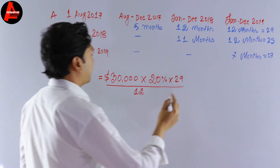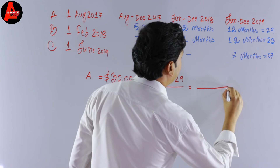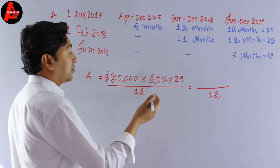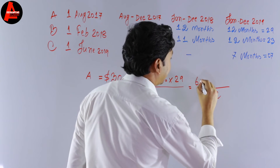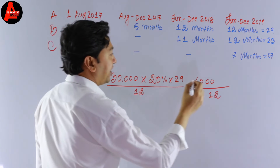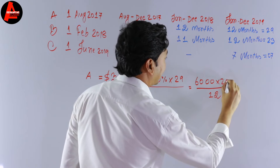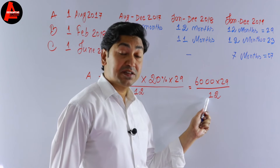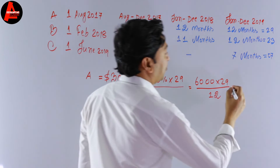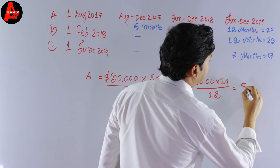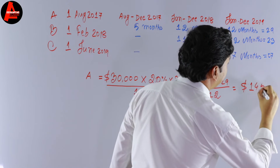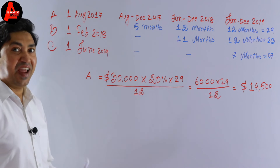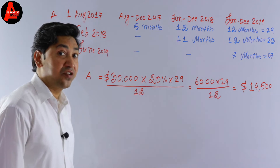For Vehicle A: cost price is $30,000. Depreciation = 30,000 × 20% × 29/12. First, 30,000 × 20% = $6,000. Then 6,000 × 29 / 12 = $14,500. This is the depreciation for Vehicle A.